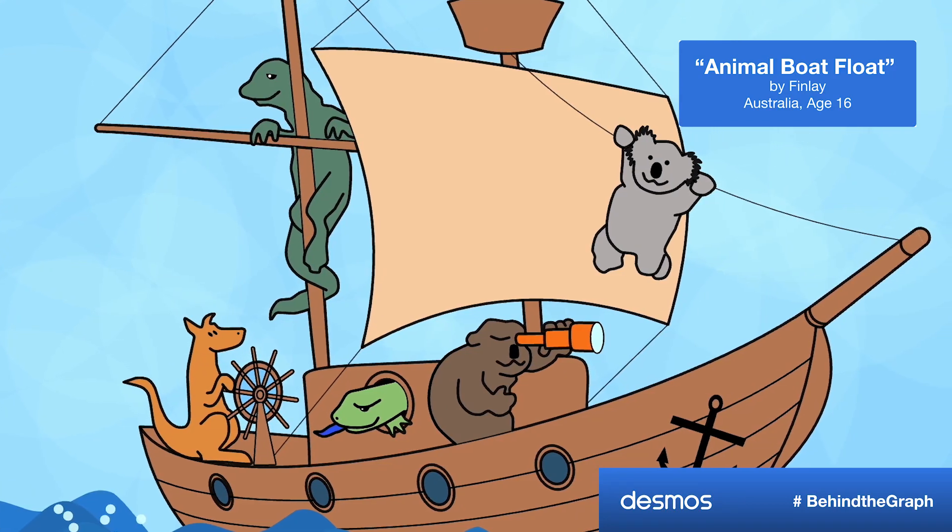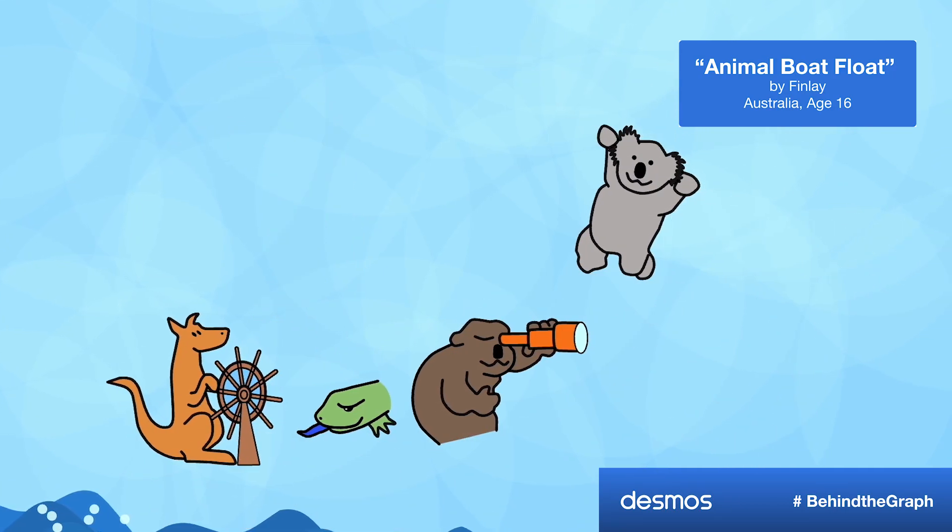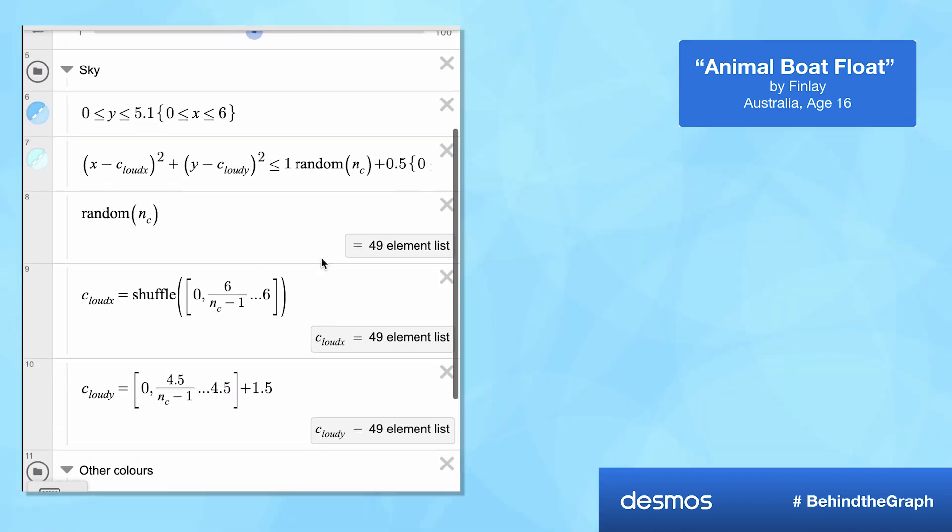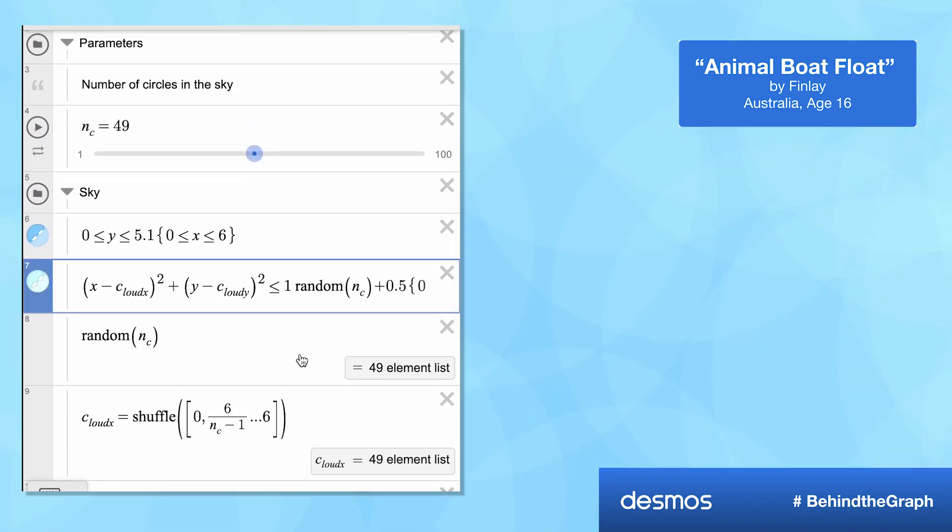Today on Behind the Graph, we're taking a closer look at the graph of Animal Boat Float submitted to us by Finley, and we're going to see if we can follow their lead on how to create that awesome sky background effect in less than 10 lines of equations. Let's get started.